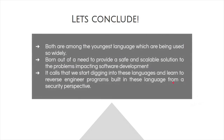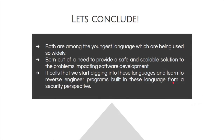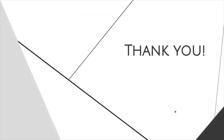In conclusion, both Go and Rust are among the youngest languages being widely used today. They were born out of a need to provide safe and scalable solutions to problems impacting software development. This calls for digging into these languages and learning to reverse engineer programs built in them from a security perspective. That is the end of our talk. Thank you.